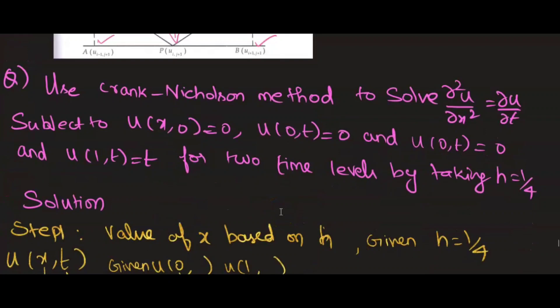Now let us see the problem: Use Crank-Nicholson method to solve. This is ut = c² uxx format. In the place of c², what we have here — c² is 1 in this problem. Subject to: u(x, 0) = 0, u(0, t) = 0, and u(1, t) = t — for 2 time levels by taking h = 1/4.